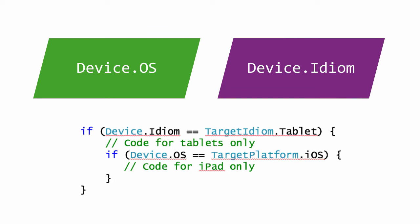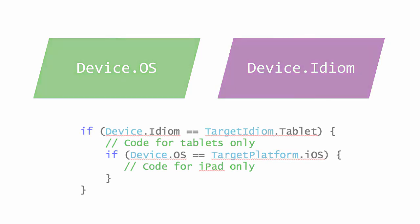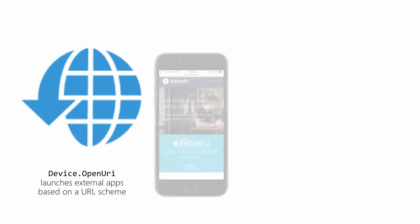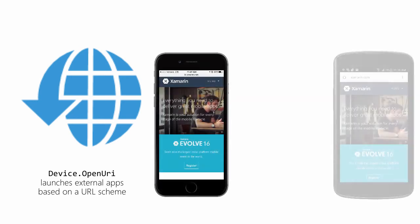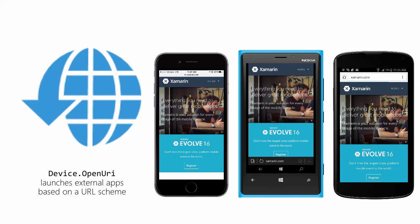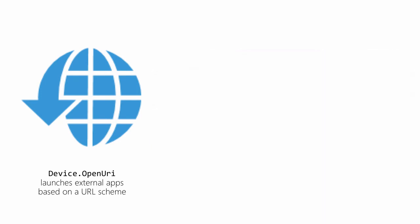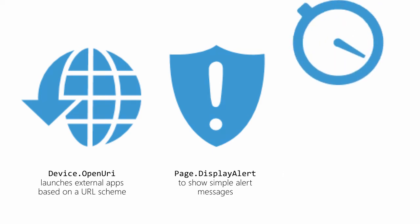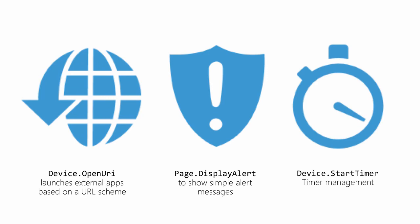Xamarin.Forms has support for dealing with a few very common platform-specific features. There is Device.openUri to open a URI using the platform handler — for example, if you pass in an HTTP URL, each platform will open that browser app and launch that page. The Page.displayAlert instance method can be used to show a two-button modal message box. There is also a Page.displayActionSheet that supports more buttons. Device.startTimer can be used to create a timer — return false from the delegate to stop the timer.